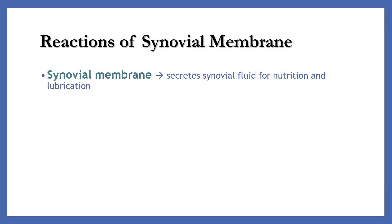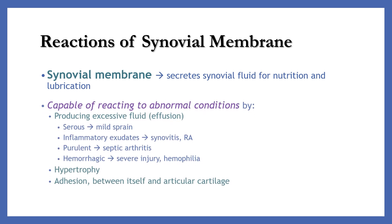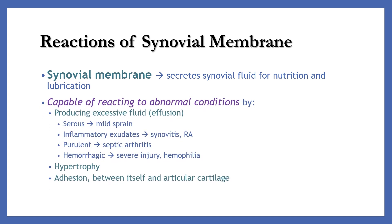Reaction of synovial membrane. It can secrete synovial fluid for nutrition and lubrication. It is capable of reacting to abnormal conditions by producing excessive fluid or effusion, which is serous in mild sprain, inflammatory exudate in synovitis or rheumatoid arthritis, purulent in septic arthritis, or hemorrhagic in severe injury or hemophilia. There is also hypertrophy and adhesion between itself and articular cartilage.